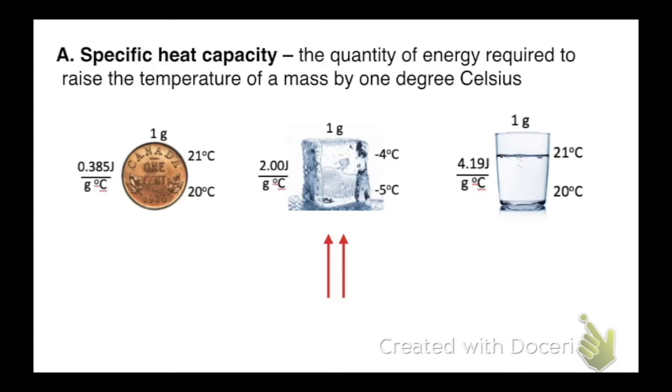So the specific heat capacity of this substance is two joules for every gram degree Celsius. We're going to imagine that each arrow is one joule of energy. So there's two joules of energy there. That's the specific heat capacity of that one. The specific heat capacity of the penny is only 0.385 joules per gram degree Celsius. So that's quite a bit smaller of a number. So I have just a smaller arrow there.